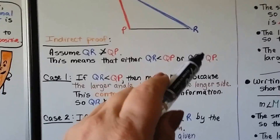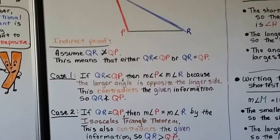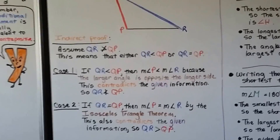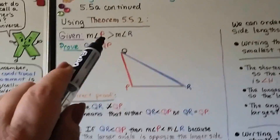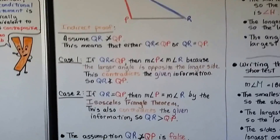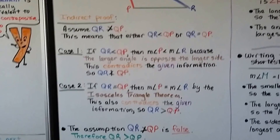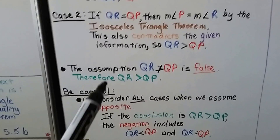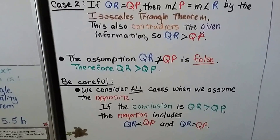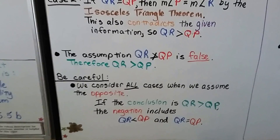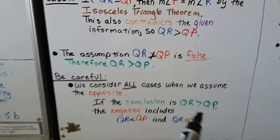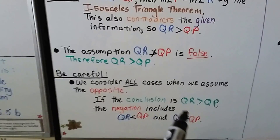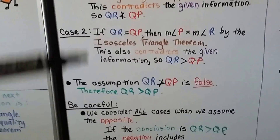For case two, if QR equals QP, then the measure of angle P equals the measure of angle R by the isosceles triangle theorem. This also contradicts the given information that P is larger than R. So QR is greater than QP. The assumption that QR is not greater than QP is false. Therefore, QR is greater than QP. Be careful: we consider all cases when we assume the opposite — if the conclusion is that QR is greater than QP, the negation includes both less than and equal to.